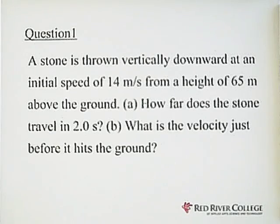So in this question, the given information is initial speed of 14 meter per second is downward. The height is 65 meter, which is the displacement total, the height. And we're looking for the displacement when t equals 2 seconds, looking for how far that the stone travel hits the ground.